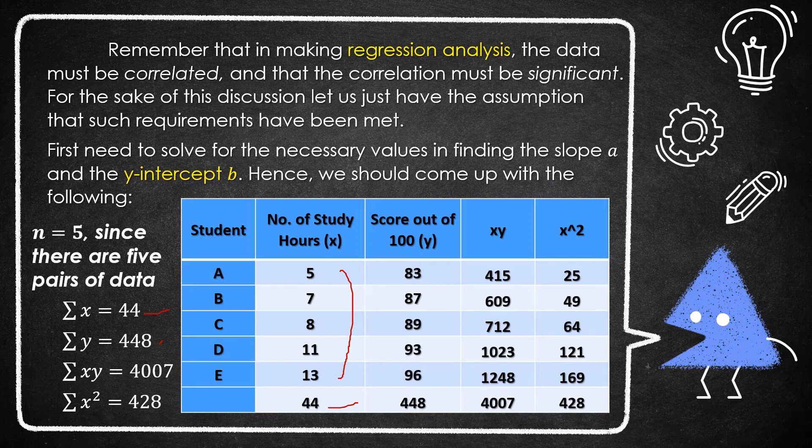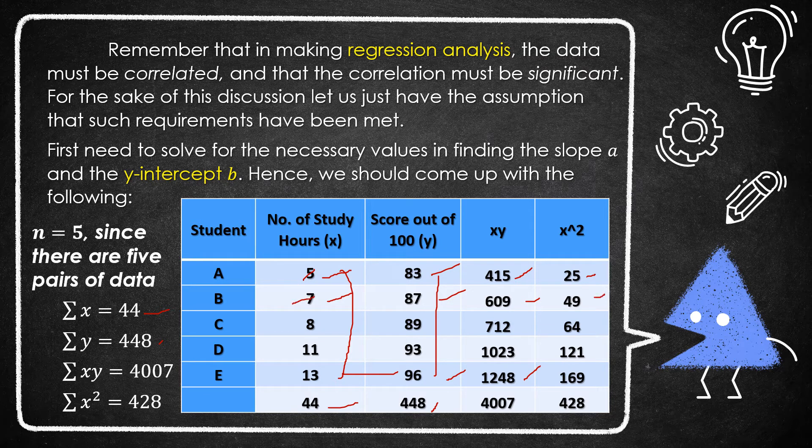For summation of y, we add 83 to 96, which is 448. For xy, multiply 5 times 83 equals 415, 7 times 87 equals 609, and so on, up to 13 times 96 equals 1,248. For x squared: 5 squared equals 25, 7 squared equals 49, up to 13 squared equals 169. Adding 25 to 169, we get summation of x squared equals 428.